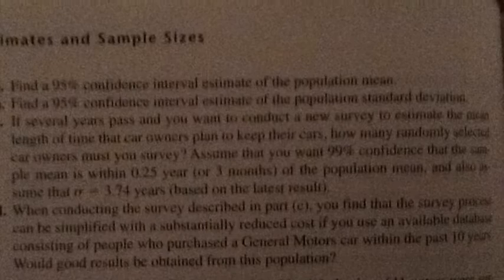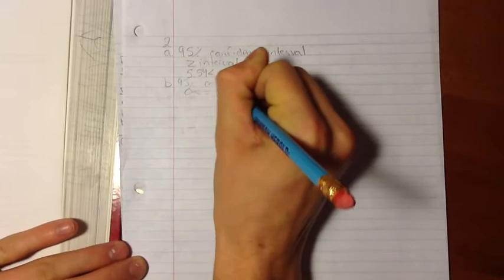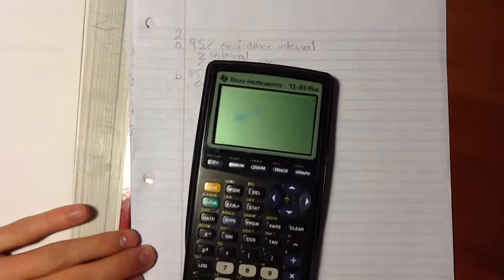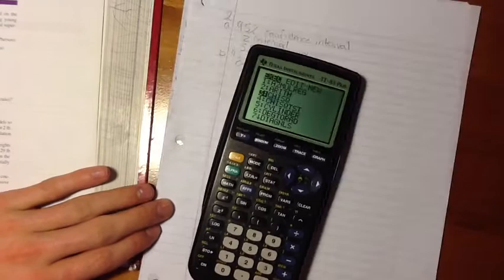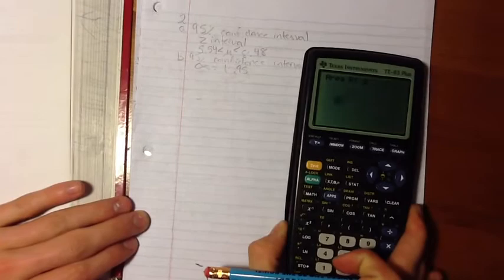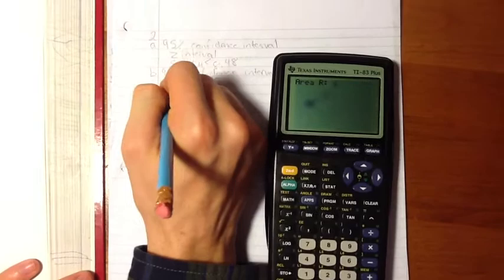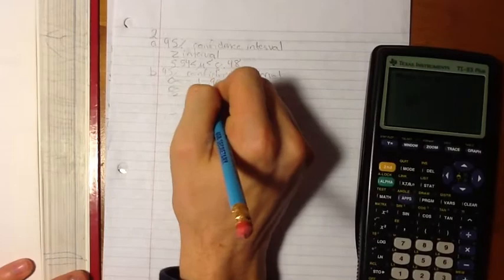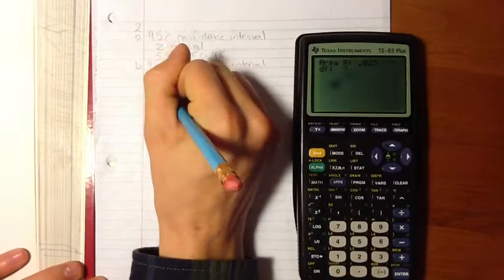Problem 2a wants us to find a 95% confidence interval estimate of the population mean. Problem 2b says find a 95% confidence interval estimate of the population standard deviation. For this, we first need to find alpha. Alpha is equal to 1 minus 0.95. 0.95 is the confidence interval. So we take our calculators, we go to program, we go down to chi-sq, which is the third one, press enter, then we press enter again, and it gives us area R. Area R is equal to alpha over 2, which is equal to 0.025. We put that in our calculators, press enter, then the degree of freedom is N minus 1. So we put in 24 for the degree of freedom and press enter.